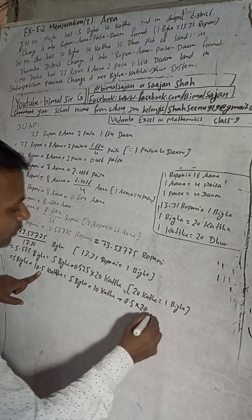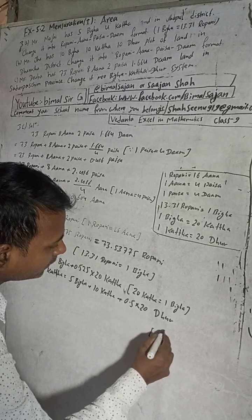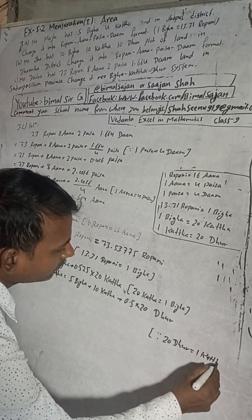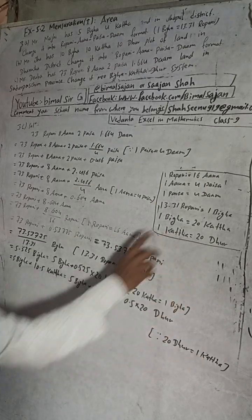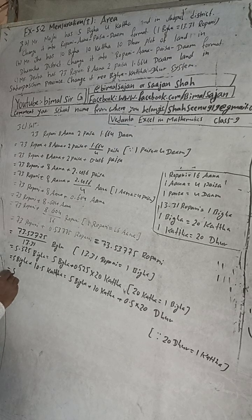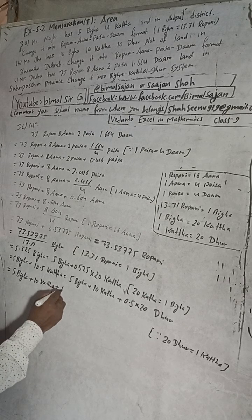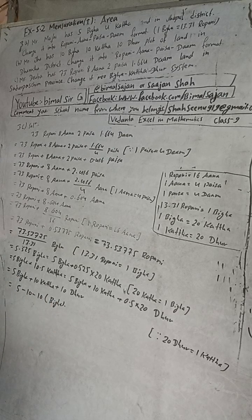Now 0.5 kata remains. The reason for this is 20 dhur is equal to 1 kata, so multiply 0.5 by 20, which gives 10. So now this equals 5 bigha, 10 kata, 10 dhur. Okay, this is the answer. The answer in the book is also 5 bigha 10 kata 10 dhur.